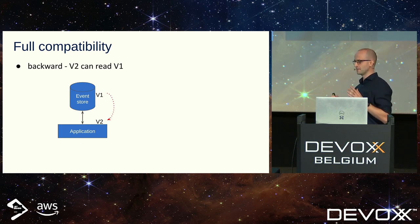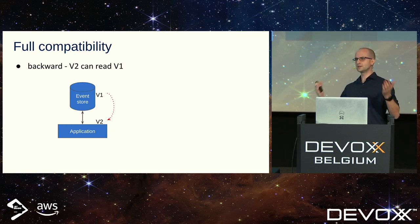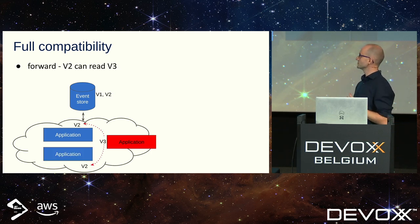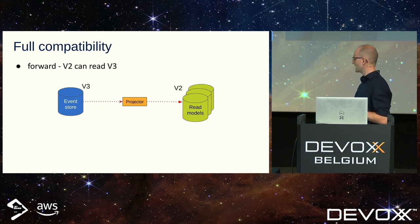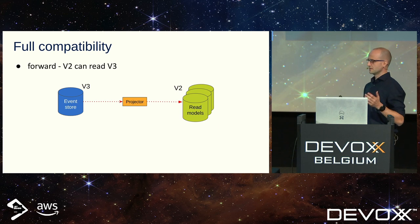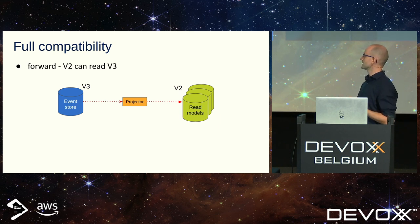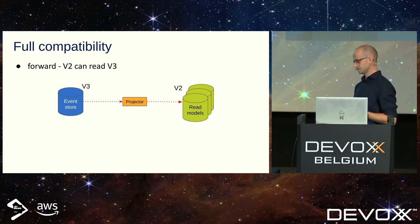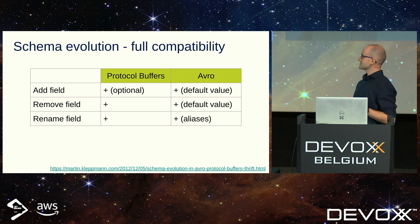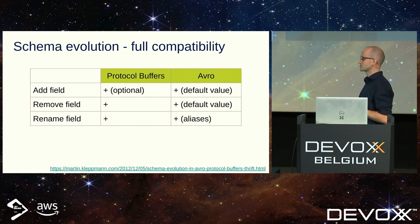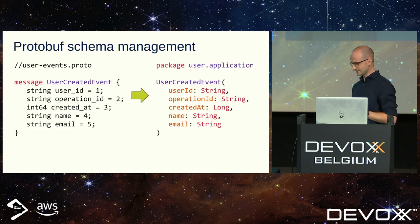Full compatibility means both backward and forward. Backward compatibility is obvious — you need to read old events from your database. But you also need forward compatibility for rolling updates and to update your command service side without updating all projectors at the same time. With forward compatibility, it's possible — you can add a field, remove a field, even rename a field. From my perspective it's easier to do this in Protocol Buffers.